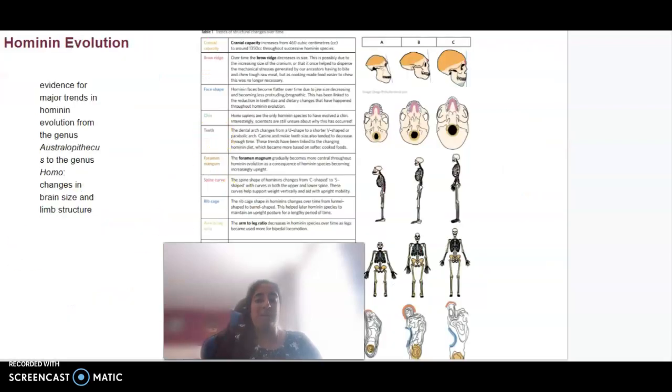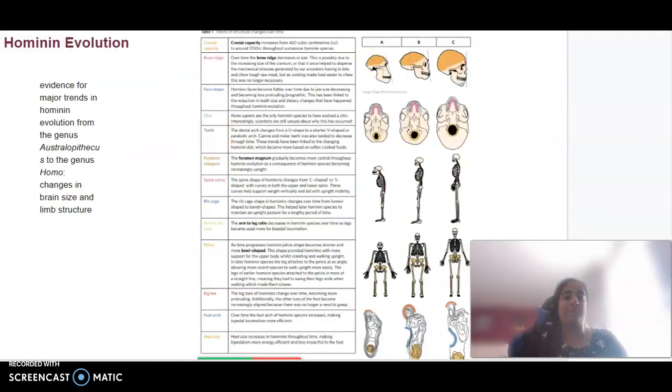Looking at specifically hominin evolution, the major trends and changes that have occurred from the genus Australopithecus to the genus Homo, the big changes we're going to look at are brain size and limb structure. But there are also quite a few other structural changes that have occurred over time. These diagrams show A being Australopithecus, C looking at Homo and the changes that have occurred.